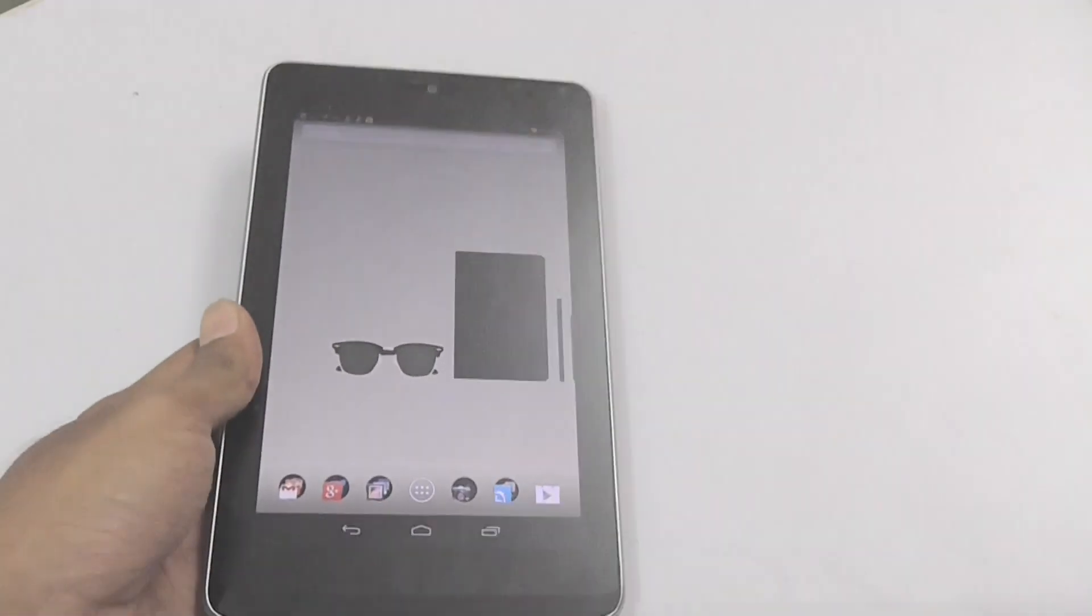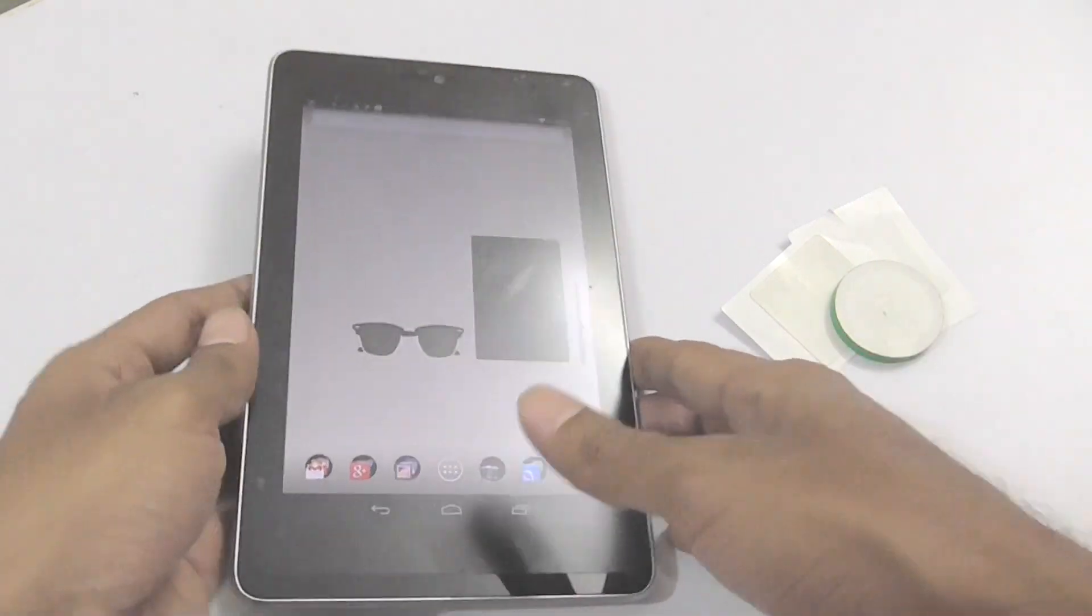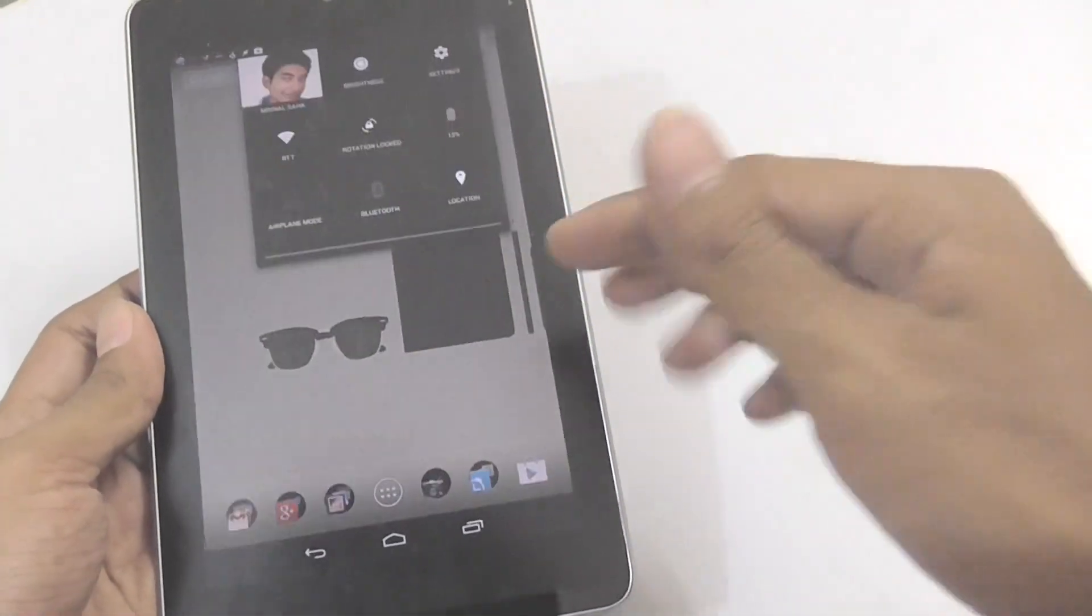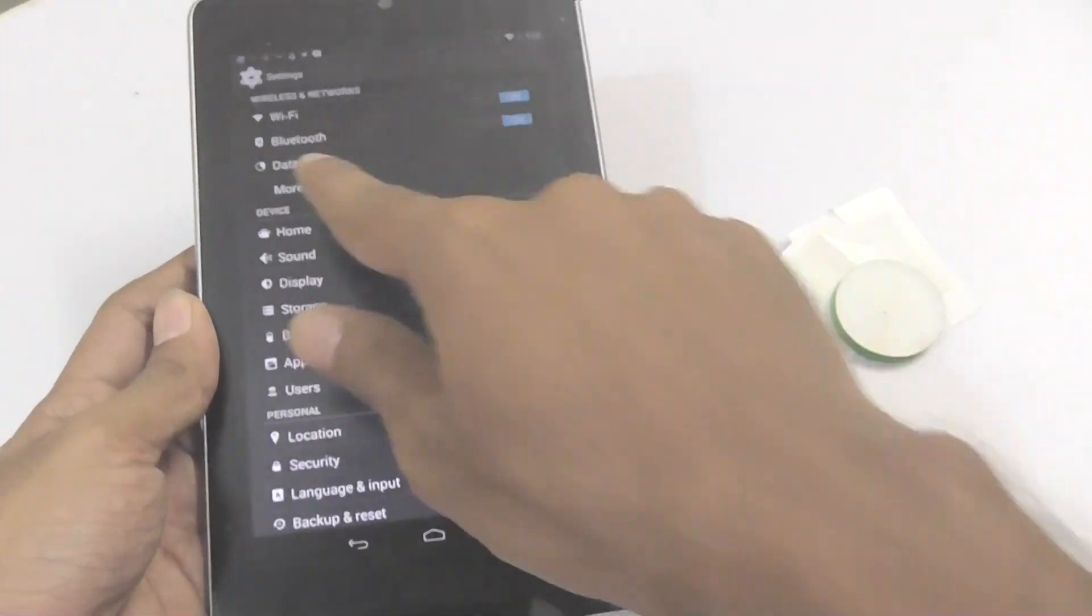Now, let me just show you practically how NFC works using my Android tablet and some of the NFC tags. So what happens is, when your device is unlocked, NFC gets turned on automatically. And if it doesn't turn on, you can go to its settings and do that manually.